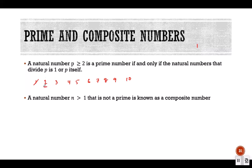For example, consider 2: it is divided by only 1 and 2 itself. So 2 is a prime number. Now consider 3: only 1 divides 3 and 3 divides itself. So 3 is another example of a prime number.